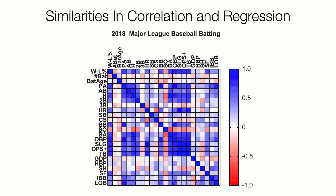Now some similarities. When the correlation is negative, as indicated in red in this Major League Baseball correlation chart, the regression slope is negative. And when the correlation is positive, as indicated in blue, the regression slope is positive.